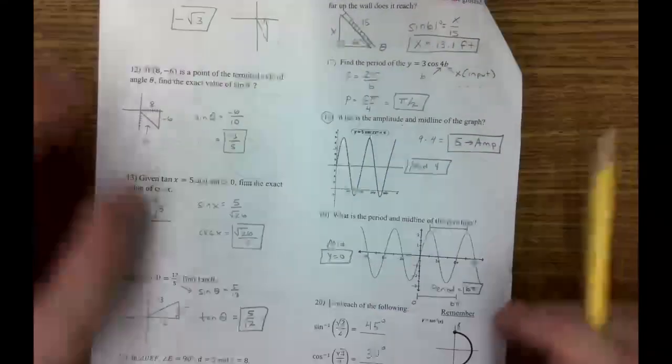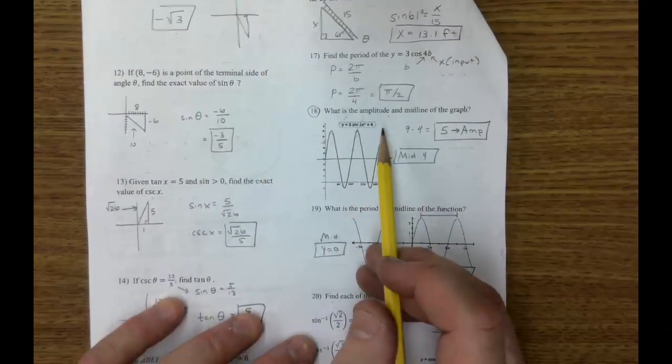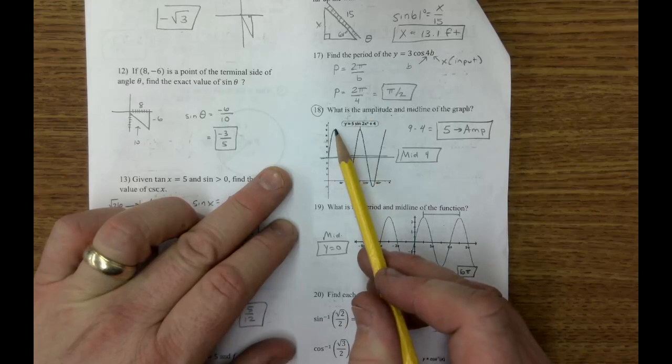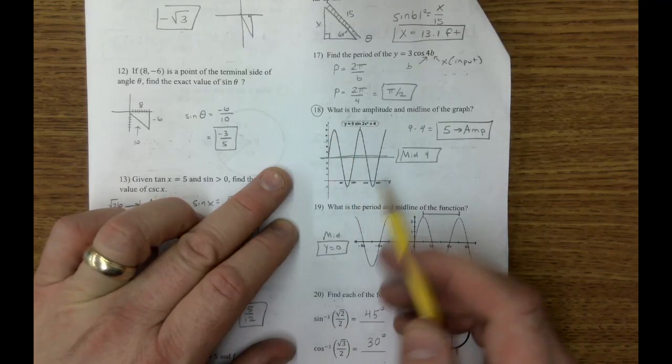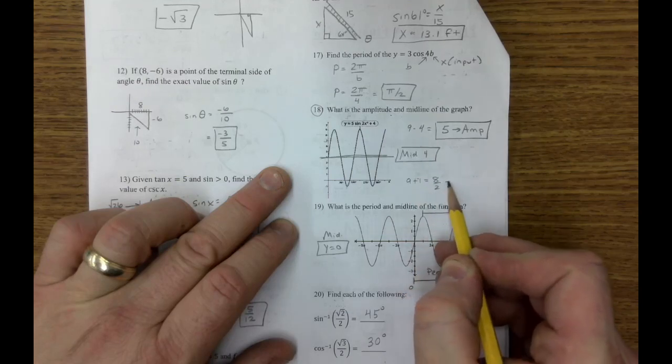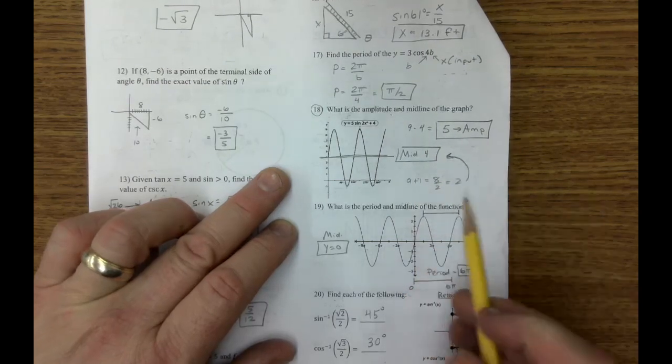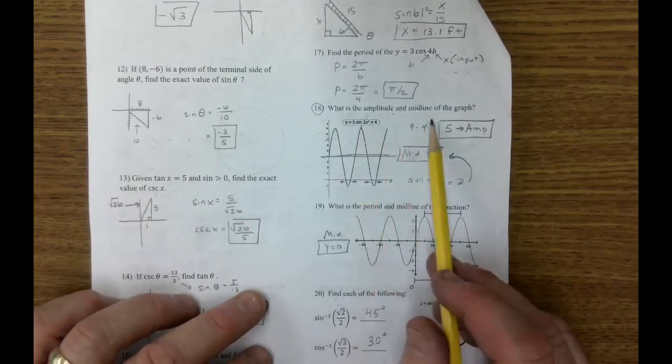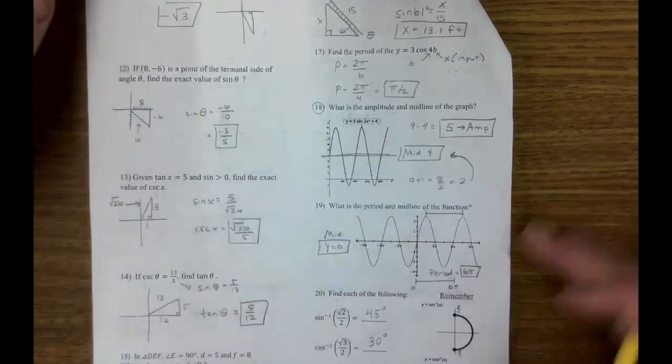Questions on page two. People asked about number 18. You're going to draw a midline. You can take the highest, which is 9, and the lowest, which is negative 1. 9 plus negative 1 is 8. Divided by 2 is the middle, the average of those. So there's our middle. And from the middle to the max, 9 minus 5 is 4 for an amplitude.